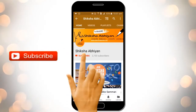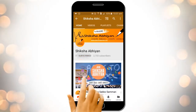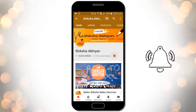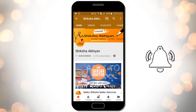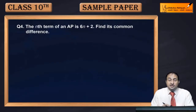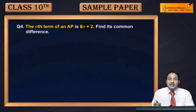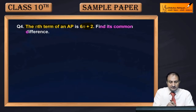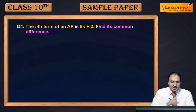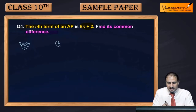Subscribe to our channel by clicking the subscribe button, click the bell button and enjoy the latest uploads. Now see the fourth question: the nth term of an AP is 6n plus 2. We need to find its common difference. The nth term is represented as a_n equals 6n plus 2.